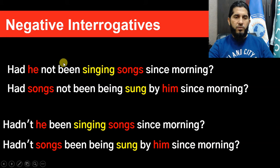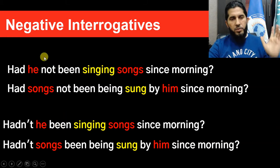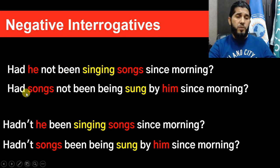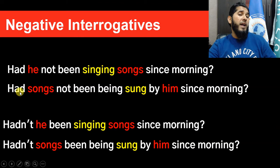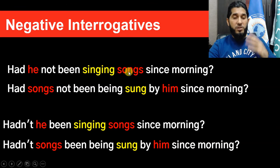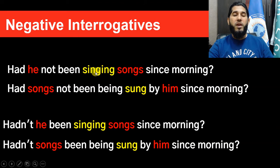For negative interrogatives, in the complete form you bring the subject between 'had' and 'not': 'Had he not been singing songs since morning?' To change to passive: 'Had songs not been being sung by him since morning?' The subject of the active sentence became the object of the preposition 'by him', and 'songs' — the object of the active sentence — became the subject of the passive sentence. The main verb changes from -ing form to third form: 'sing, sang, sung.'